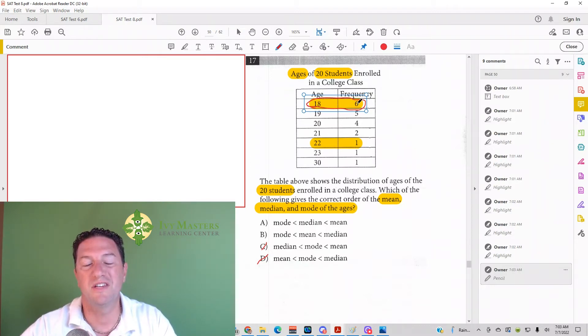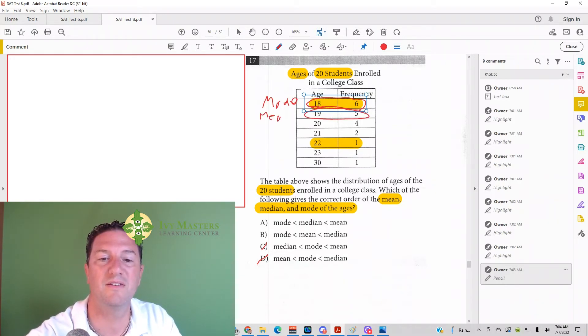So if we find the 10th student, then we've got our median. So 6 students are 18 years old. 5 students are 19 years old. There, 11 students are represented already. So I'm going to label this, this we said is the mode. So the 10th and 11th student are going to be 19 years old. We could say that this is the median. And so it looks like it's going to be mode, then median, then mean. So I'm going to go ahead and circle A.